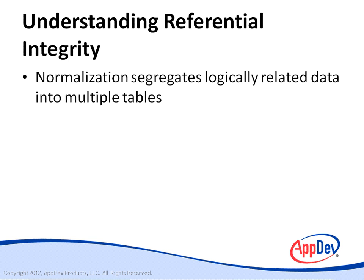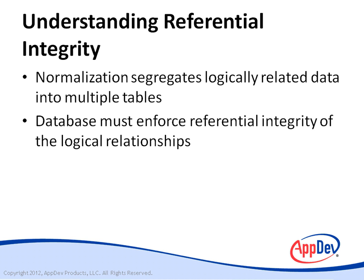By normalizing your relations, you segregate logically related pieces of information into multiple tables. To maintain consistent data, the database has to enforce the referential integrity of these logical relationships between tables.